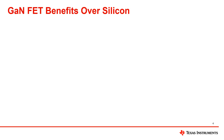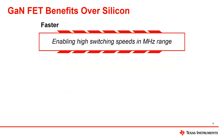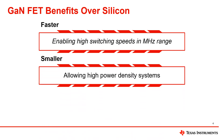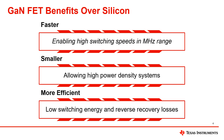GaNFETs are now providing designers and customers with a practical and viable alternative to silicon MOSFETs in higher density applications. GaN devices operate faster with high-speed switching in the megahertz range, are smaller allowing high power density systems, and are more efficient with lower switching energy and reverse recovery losses.